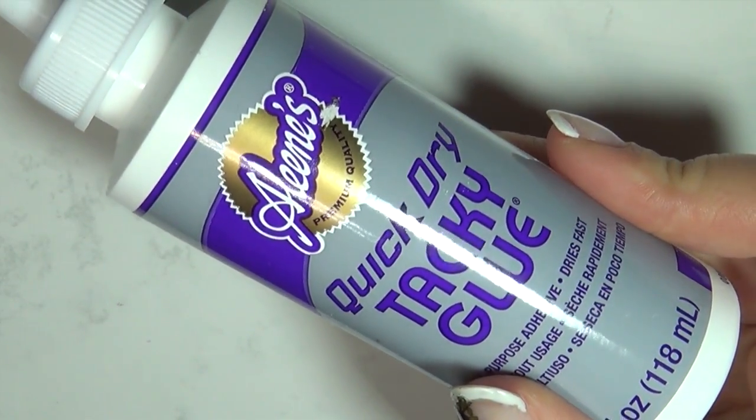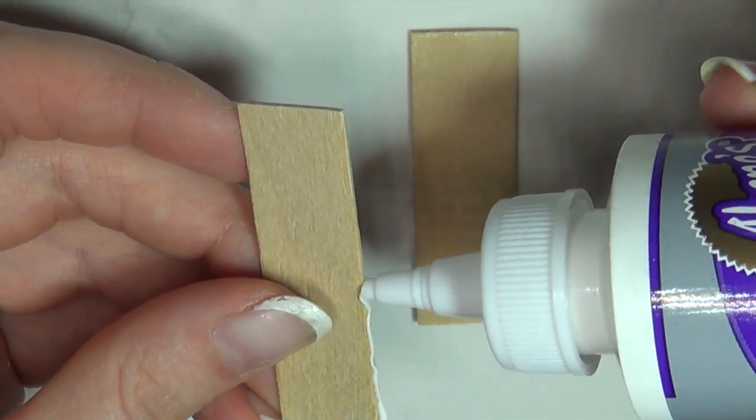Then get out some glue, I'm using tacky glue, and glue your sticks together side by side to create the surface you need.